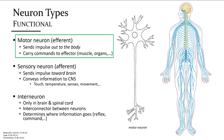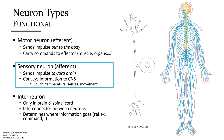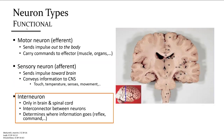Motor, or efferent neurons, send impulses out to the body. These signals control muscle cells, glands, and other tissues. Sensory, or afferent neurons, send impulses back up to the brain. And interneurons are interconnections within the brain and the spinal cord.